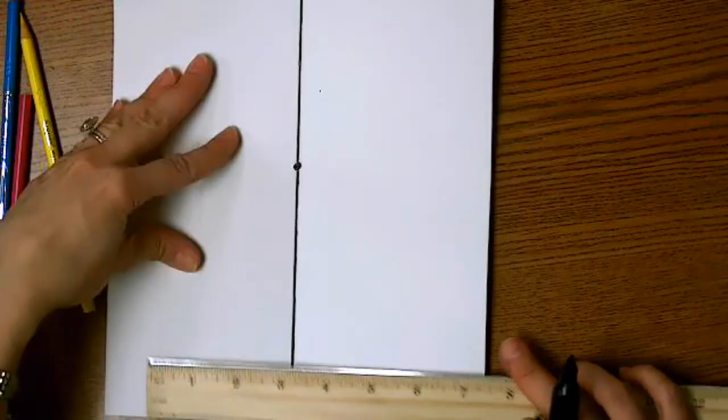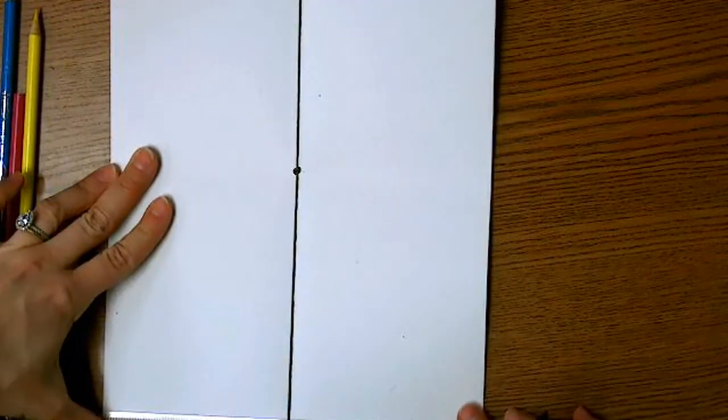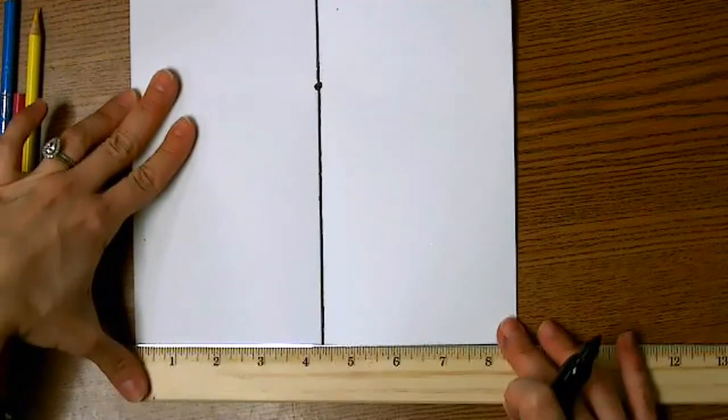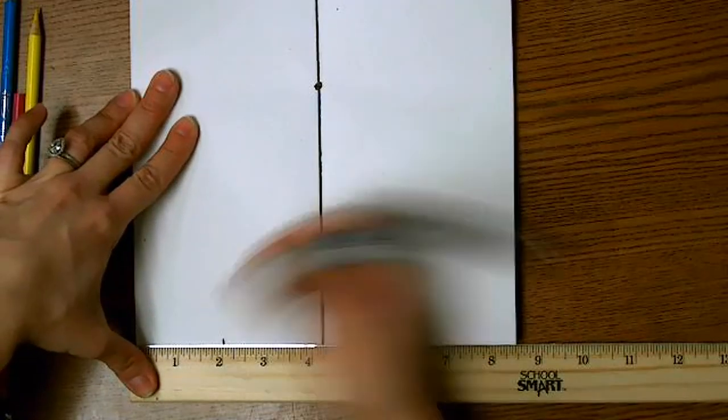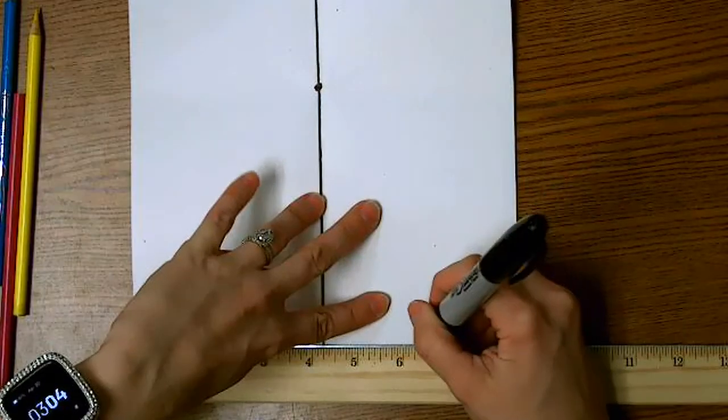Now I'm going to slide my ruler down to the other end of the paper and I'm going to do the same thing. I'm going to make a mark at two and at six and a half. Make sure that your ruler is lined up with the edge of the page.